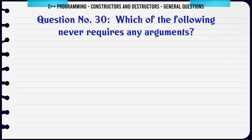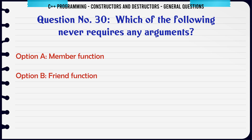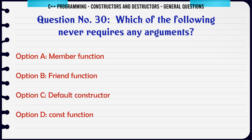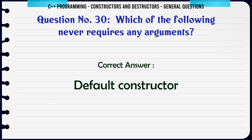Which of the following never requires any arguments? A. Member function. B. Friend function. C. Default constructor. D. Const function. The correct answer is Default constructor.